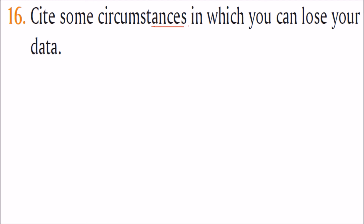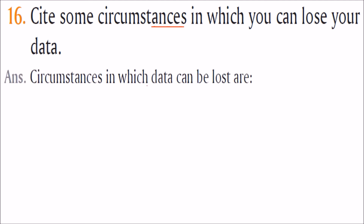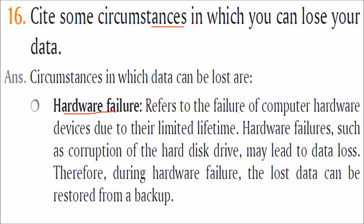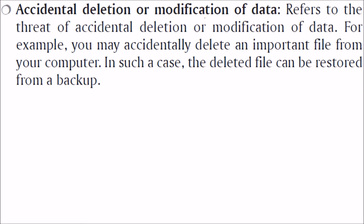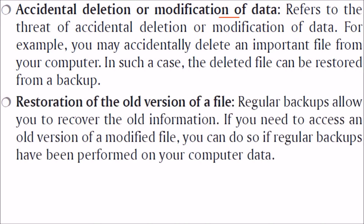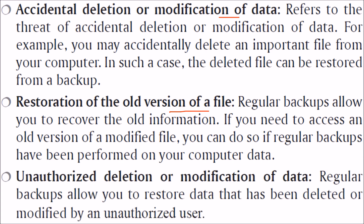Describe some circumstances in which you can lose your data. Hardware failure — failure of a computer hardware device due to its lifetime or power surges, like corruption of the hard disk drive, may lead to data loss, but can be restored from backup. Accidental deletion or modification — you can restore data from backup anytime. Restoration of an old version — if you want an old version you may have deleted, it is in the backup. Unauthorized deletion or modification — if somebody has hacked or cracked your system and modified data, you can restore it through backup.